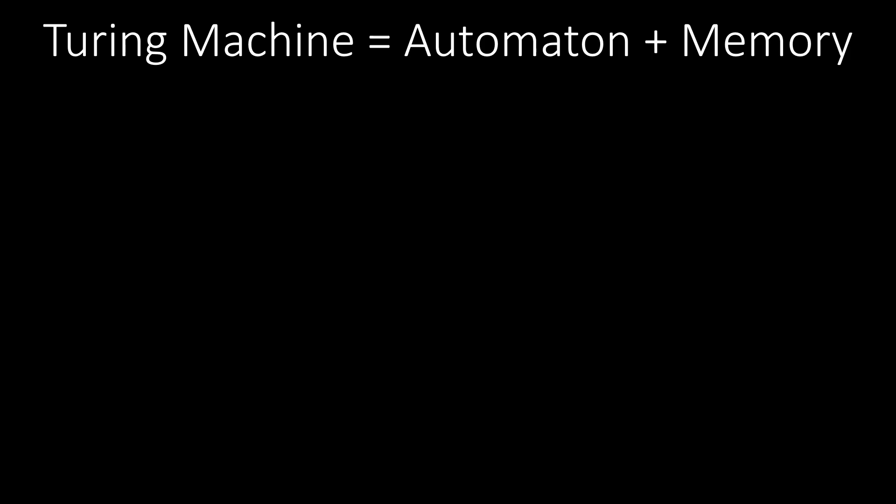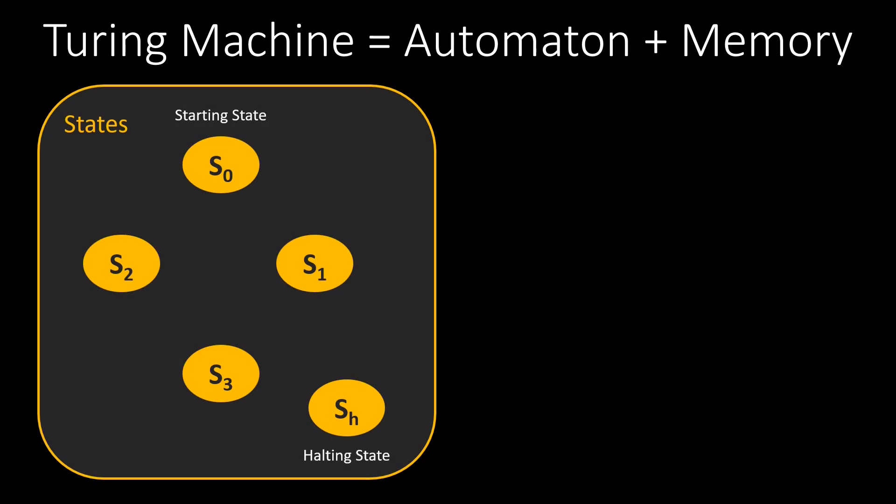First, we need something to represent the current state of our program. We might have several such states, and the transitions between these states also need to be defined. The states and the transitions define the rules for computing the program's output. A set of states with transition rules is known as a finite automaton. In a real computer, they correspond to the computer program.